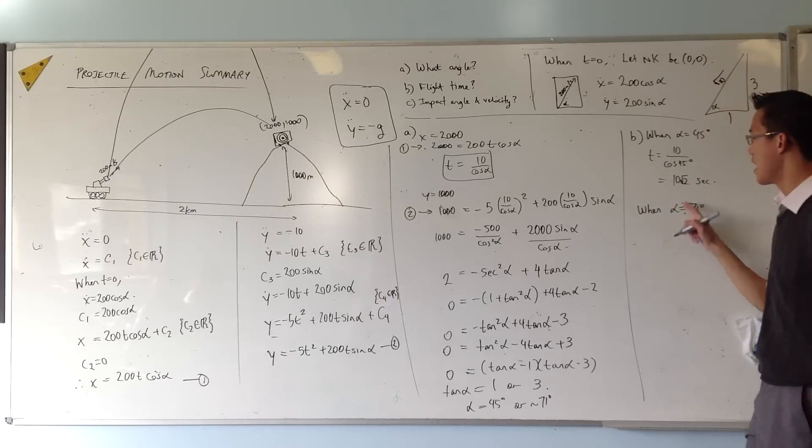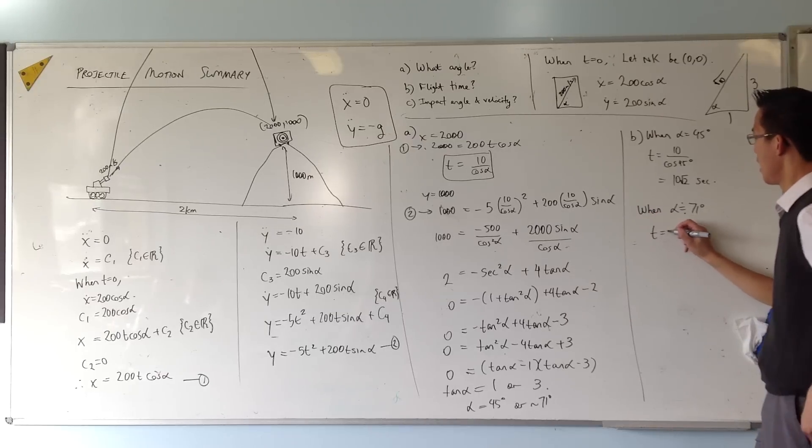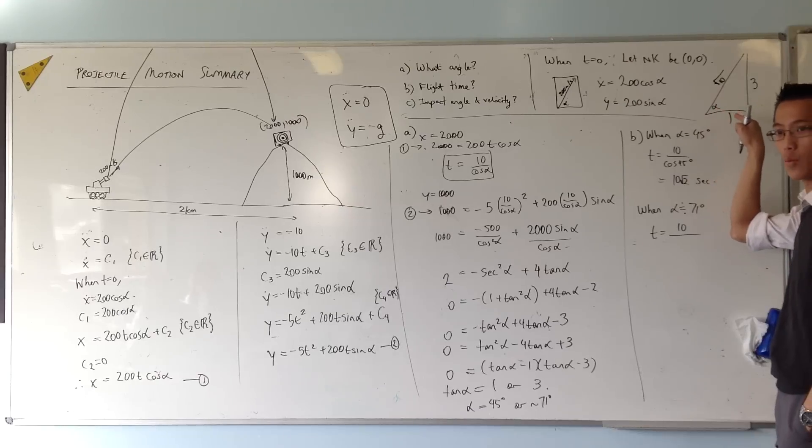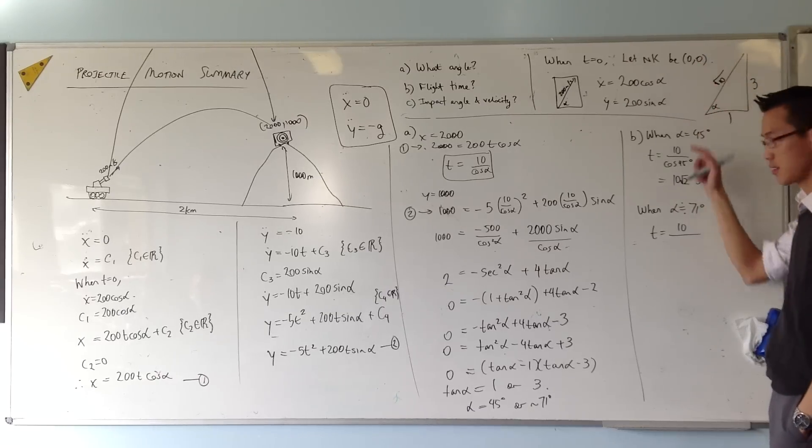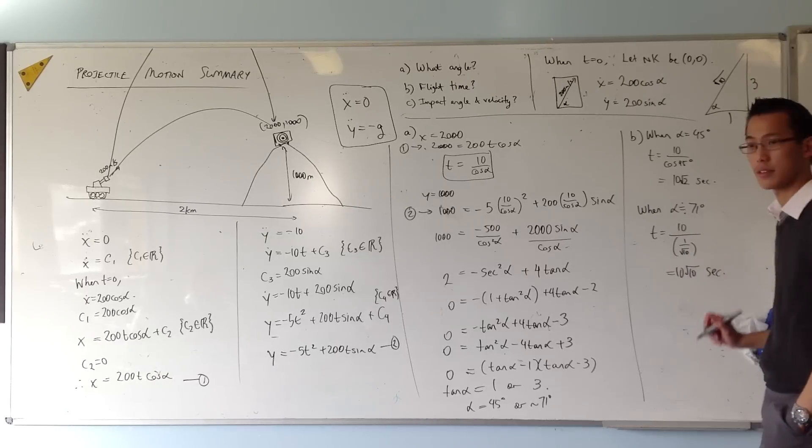Opposite and adjacent, right? So opposite over adjacent. Tan of this alpha gives you 3. So if I want to work out what cos of this new alpha is, I'm going to need the hypotenuse, which is root 10. So now instead of chucking this into the calculator getting a messy number, I can say it's 10 on cos alpha, which is 1 on root 10. So 10 root 10 seconds.